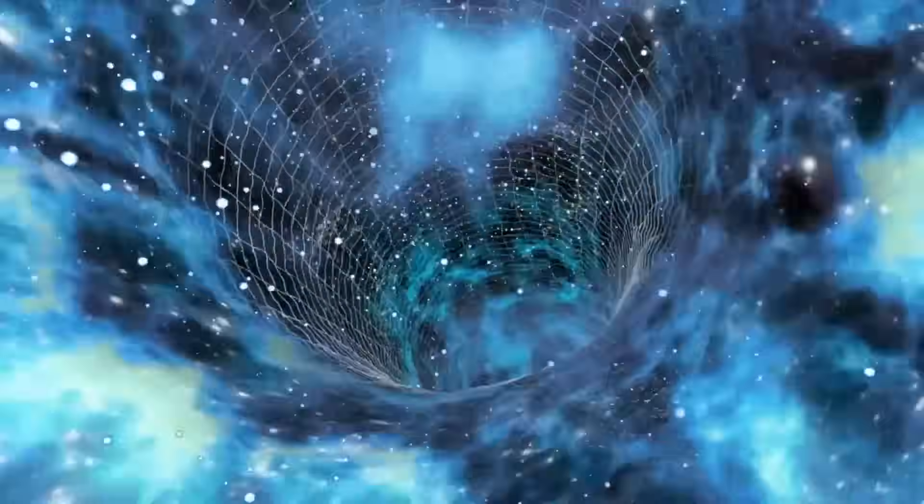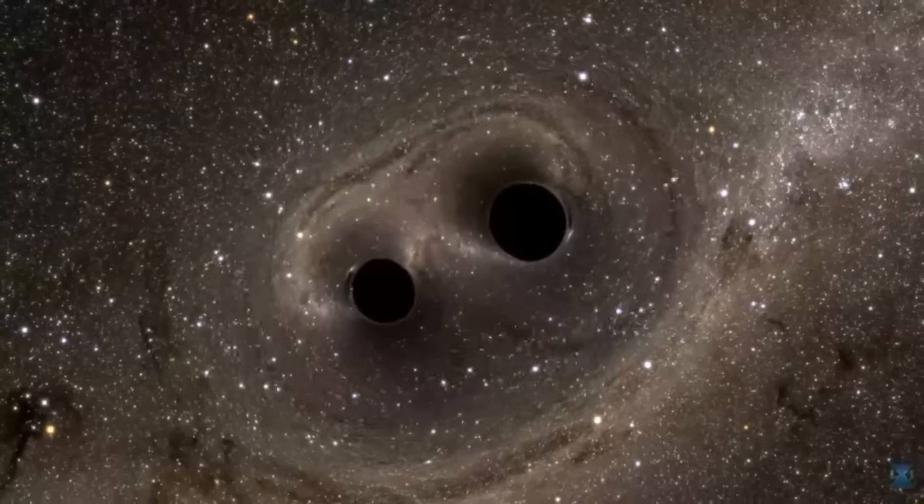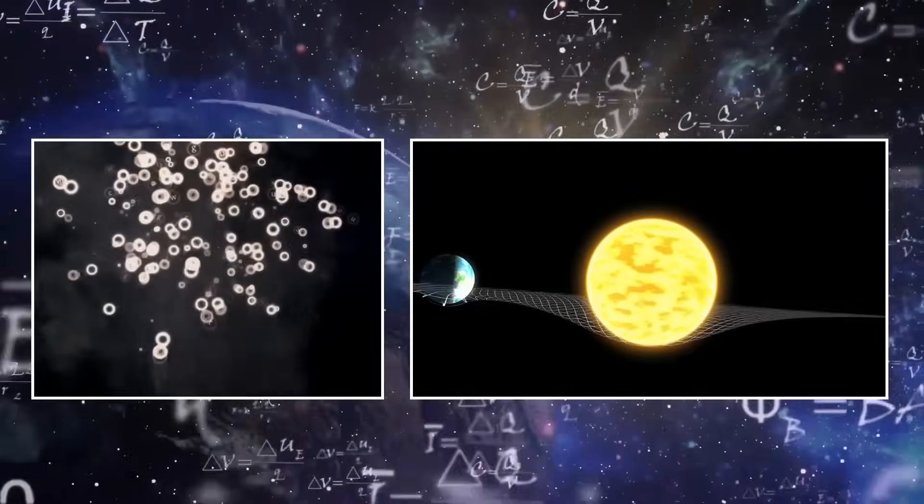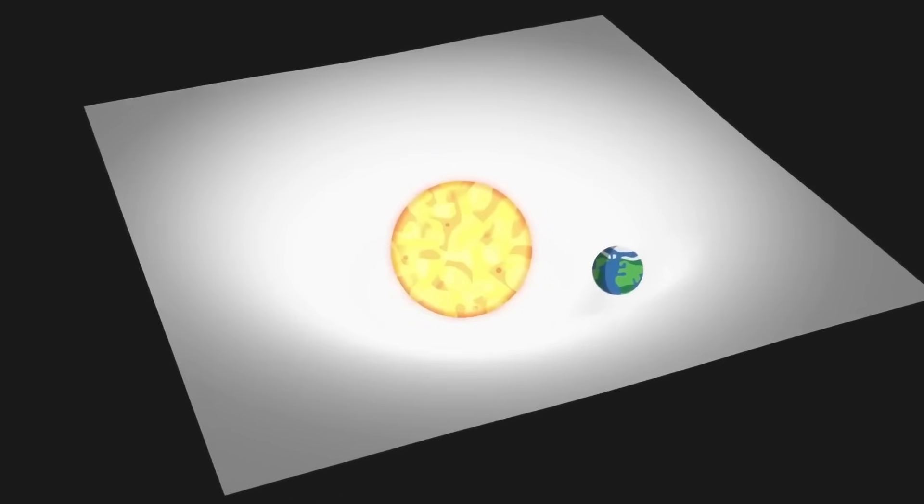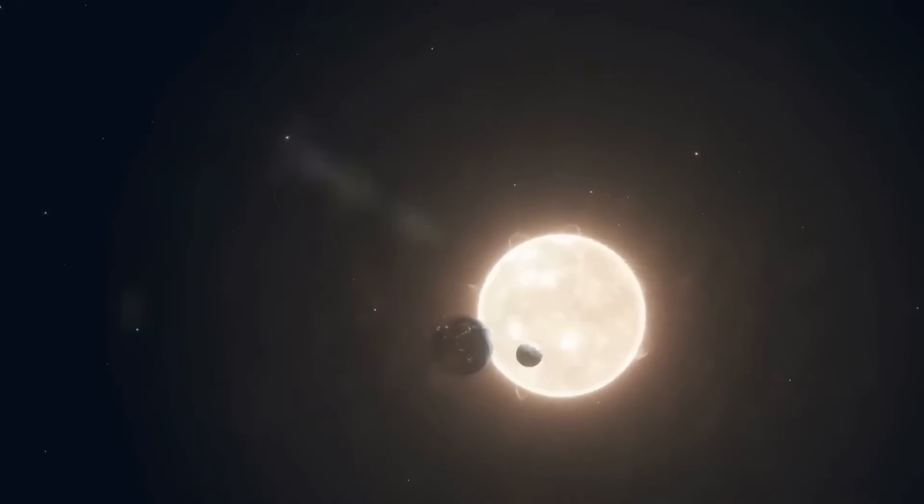Quantum gravity is a theoretical framework that attempts to unify quantum mechanics and general relativity, the two pillars of modern physics. While general relativity explains the workings of the large-scale universe, like planets, stars, and black holes, quantum mechanics governs the behavior of particles on the tiniest scales. But what happens when the two collide?